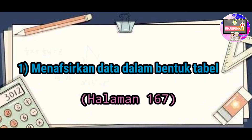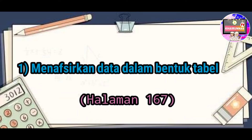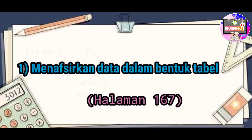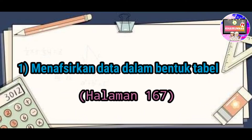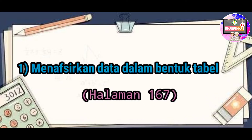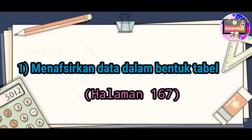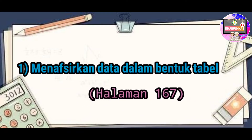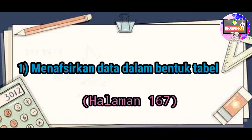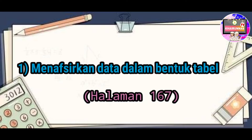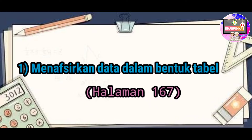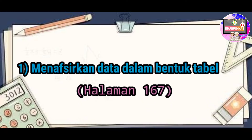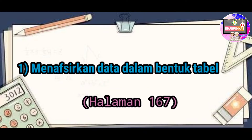Informasi yang diperoleh dapat berupa data paling banyak, paling sedikit, terendah, tertinggi, selisih, atau jumlah. Agar anak-anak lebih paham, perhatikan penjelasan berikut ini.